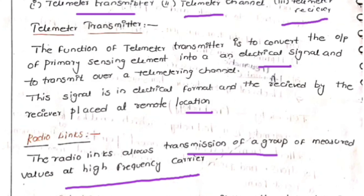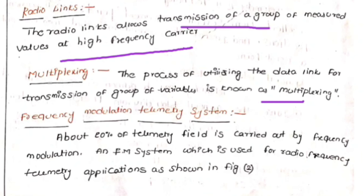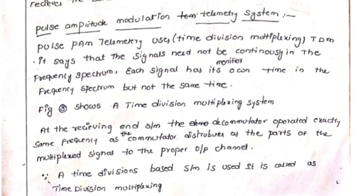The radio link allows transmission of a group of measurement values using a high-frequency carrier — that is, modulation is done with radio frequency. After that, multiplexing occurs. Multiplexing is the process of utilizing a data link for transmission of a group of variables. In modulation, the carrier and modulated signal are combined together.